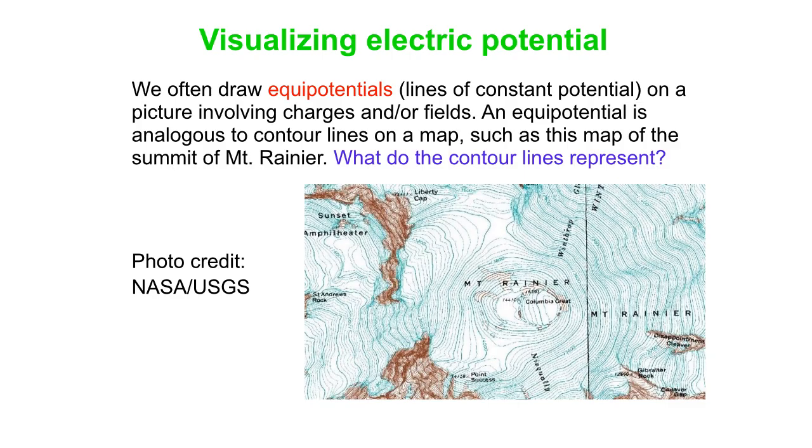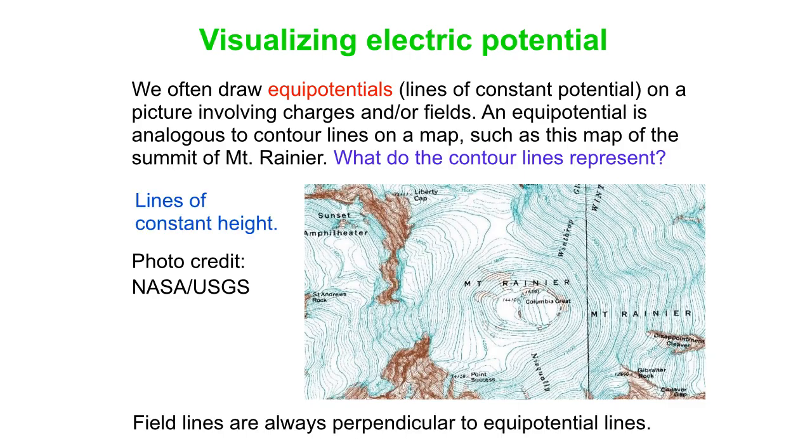You can visualize electric potential by drawing what we call equipotentials, lines of constant potential, on a picture. That is very similar to drawing contour lines on a map, such as this map of Mount Rainier. What do the contour lines represent? They are lines of constant height. Note that field lines are always perpendicular to equipotential lines. The field points in the direction of fastest decrease of potential.